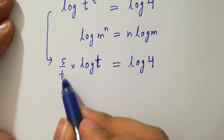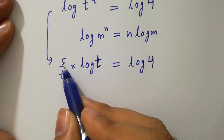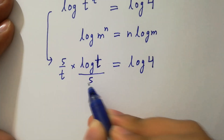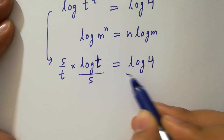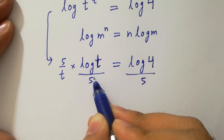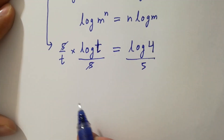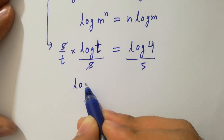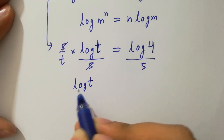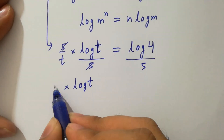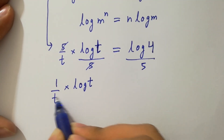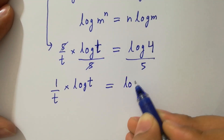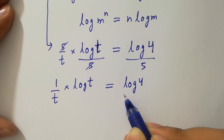To get rid of the 5, divide both sides by 5. As the 5s cancel, we have log t times 1 over t equals log 4 over 5.